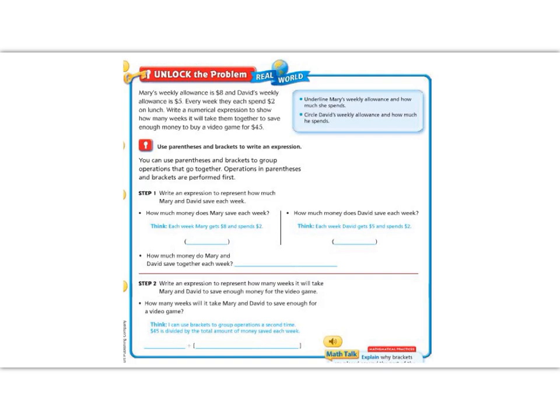Unlock the problem. Mary's weekly allowance is $8, and David's weekly allowance is $5. Every week, they each spend $2 on lunch. Write a numerical expression to show how many weeks it will take them to save enough money to buy a video game for $45.